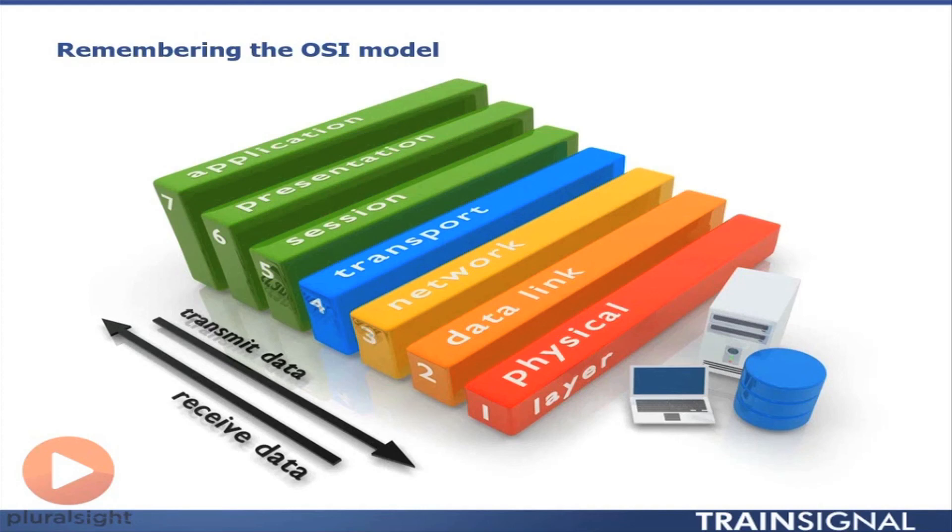Of course, if you're a vegetarian like my sister, you can feel free to substitute spinach for sausage pizza. So that mnemonic, please do not throw spinach pizza away, is starting at the physical layer and moving up through the rest of the layers. The first mnemonic I gave you, all people seem to need data processing, is moving from the top layer, the application layer, down through all the layers. So whichever way you want to memorize it, feel free to use the mnemonic that suits that way.